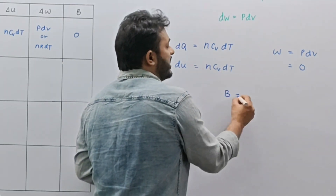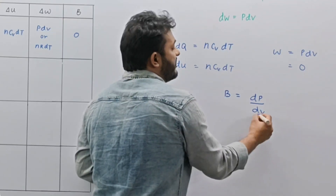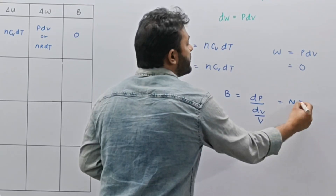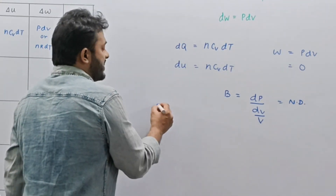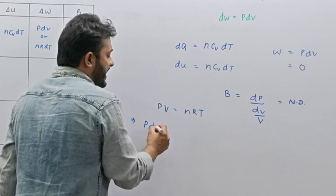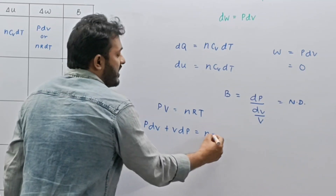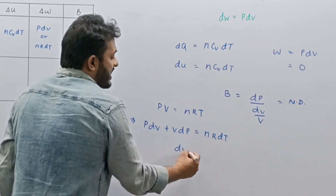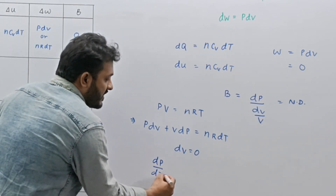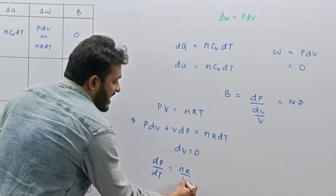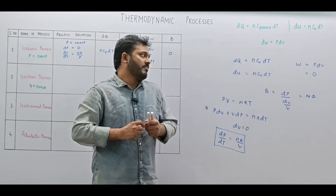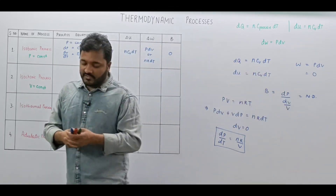In terms of bulk modulus, it is defined as minus DP upon (DV/V). Since DV is 0, bulk modulus is not defined for the isochoric process. For the process equation, we write PV equals NRT in differential form: PDV plus VDP equals NR DT. Since DV equals 0, we get DP/DT equals NR/V, which is the differential process equation for the isochoric process.